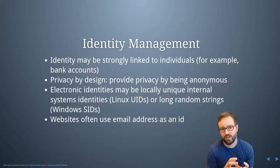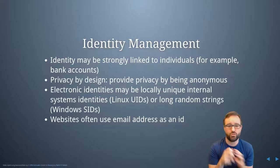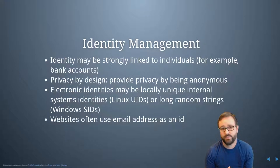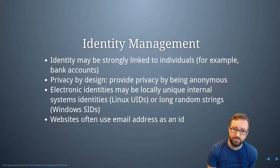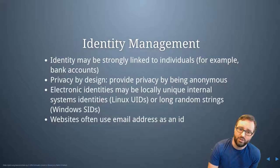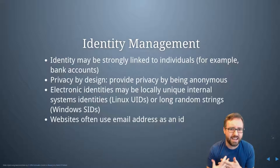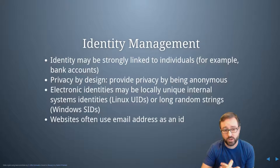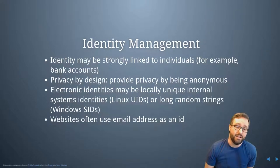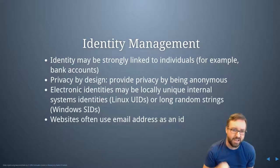Some important design decisions around authentication: you can have identity that's strongly linked to an individual. For example, to open a bank account you need to provide documentation like a passport to prove who you are — that identity is tightly linked. Anything to do with taxes and income needs to be tightly linked to personal identification, so the authentication there needs to be really strong. The opposite end is privacy by design, where you allow someone to be anonymous — they may have an identity on the system, but that identity is not tied to a specific individual.